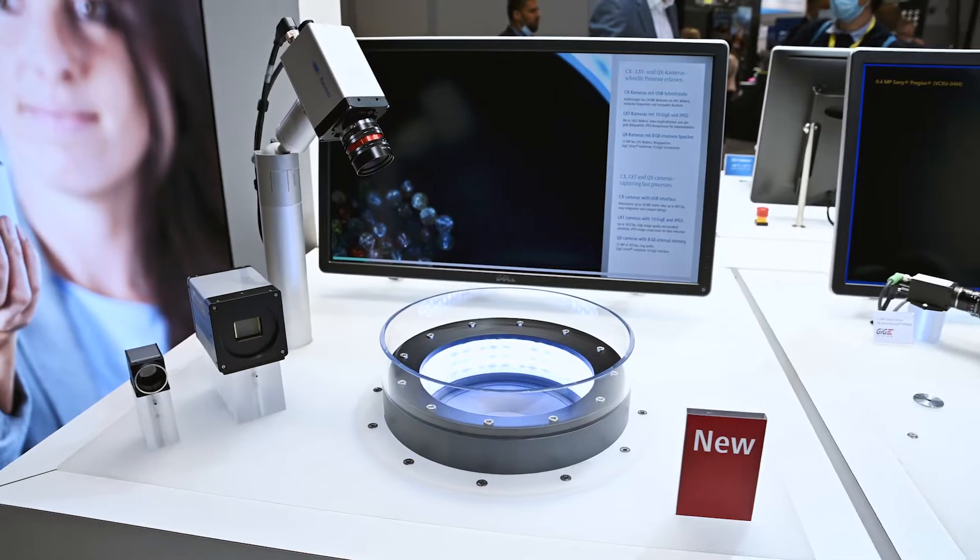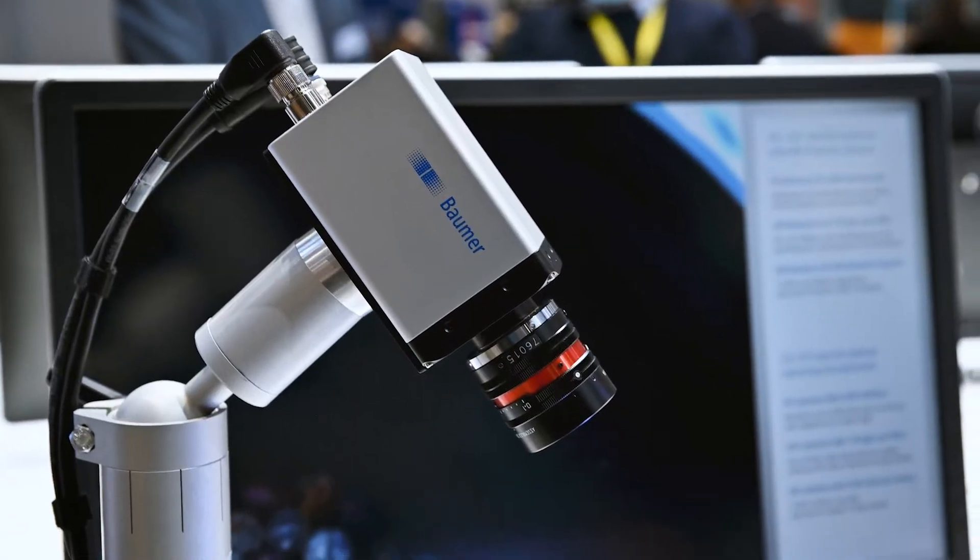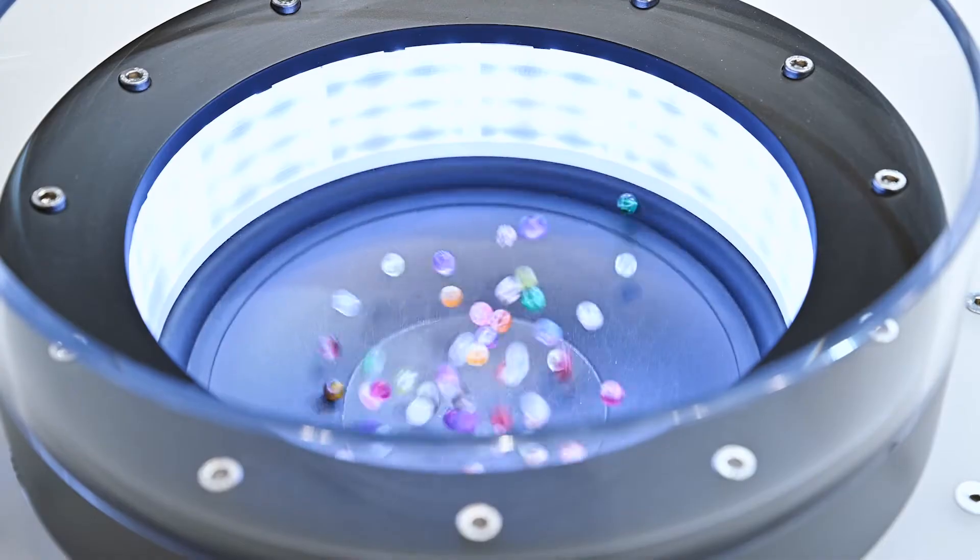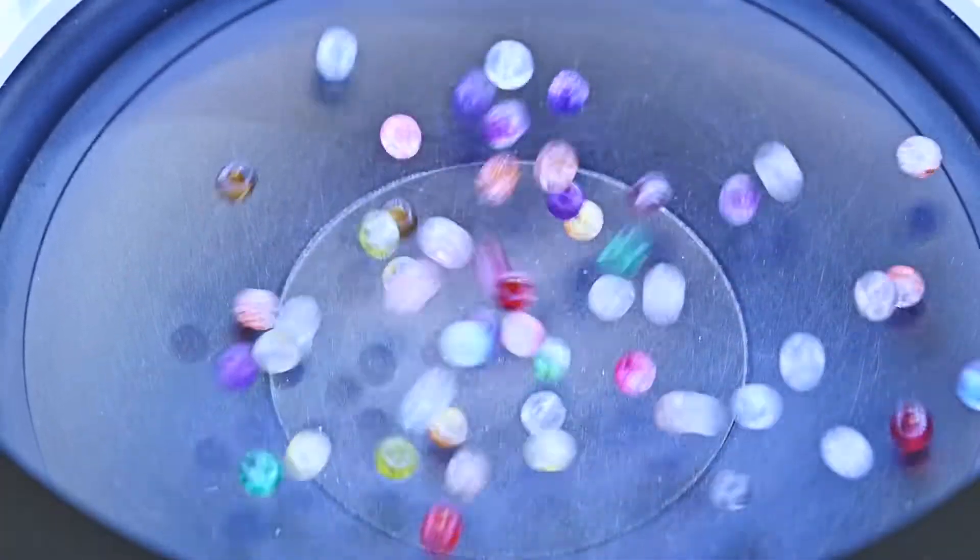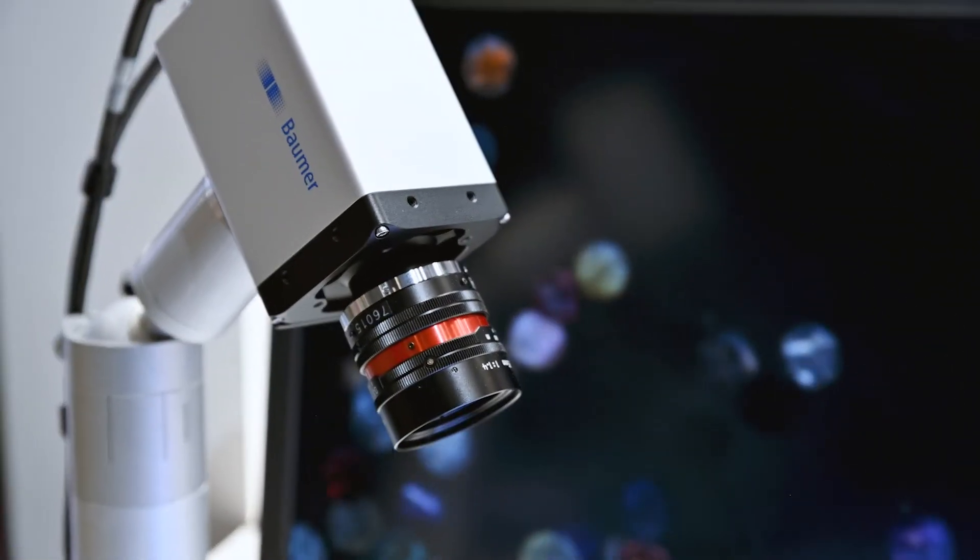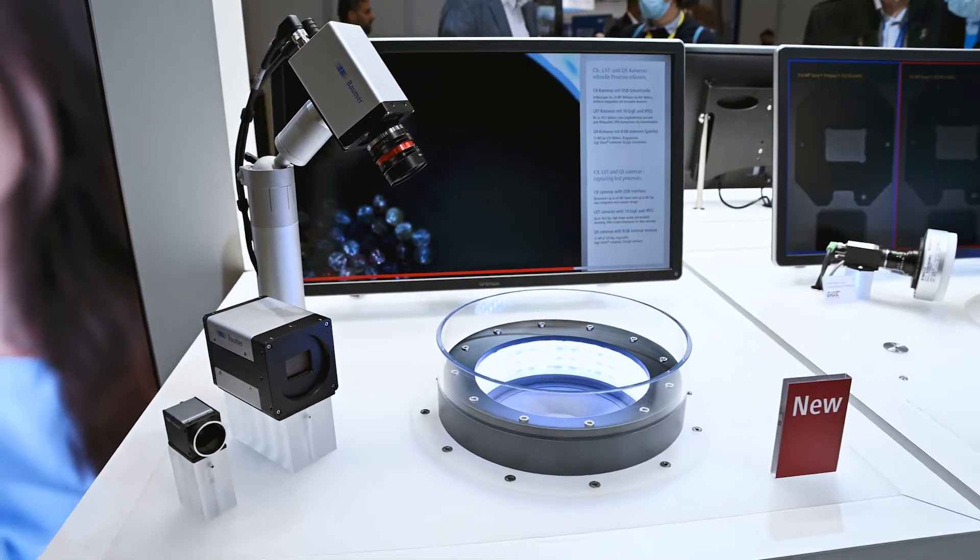High resolution, robust and fast, the powerful 10GB E LXT cameras have a lot to offer. For example, latest Sony Pregius S sensors for excellent image quality, resolutions up to 65 megapixel to capture every detail, integrated JPEG image compression to save bandwidth.